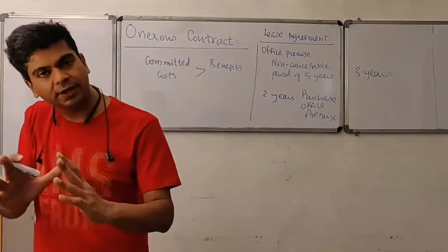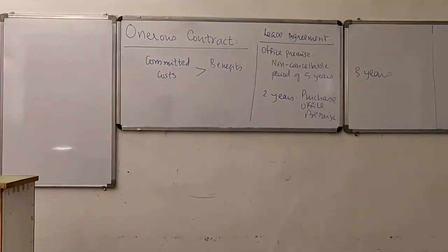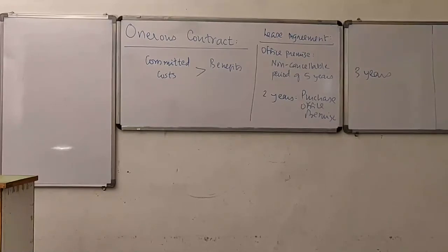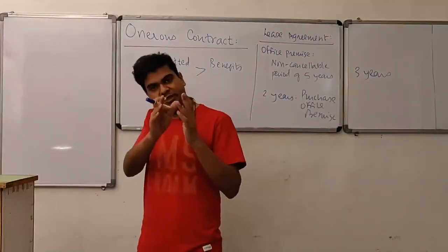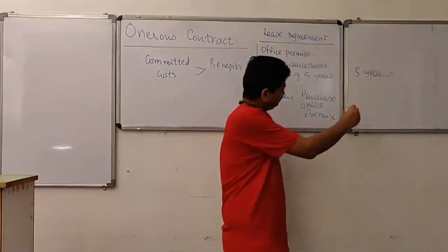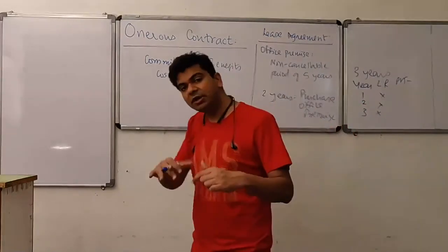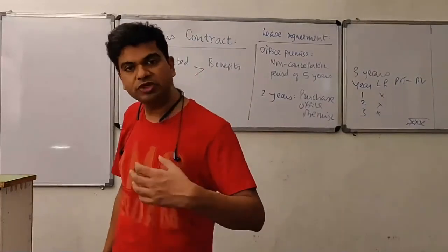The requirement of IND AS 37 is that the moment you conclude the contract has become onerous, you must recognize a provision. In this case, you will recognize a provision for the lease rent of all the subsequent 3 years together — not just for the next year alone. Find out the lease rent, multiply it by 3 years to get the total amount, and since the time value of money is material, discount the provision to find the present value. That final discounted amount will be the provision for the onerous contract.